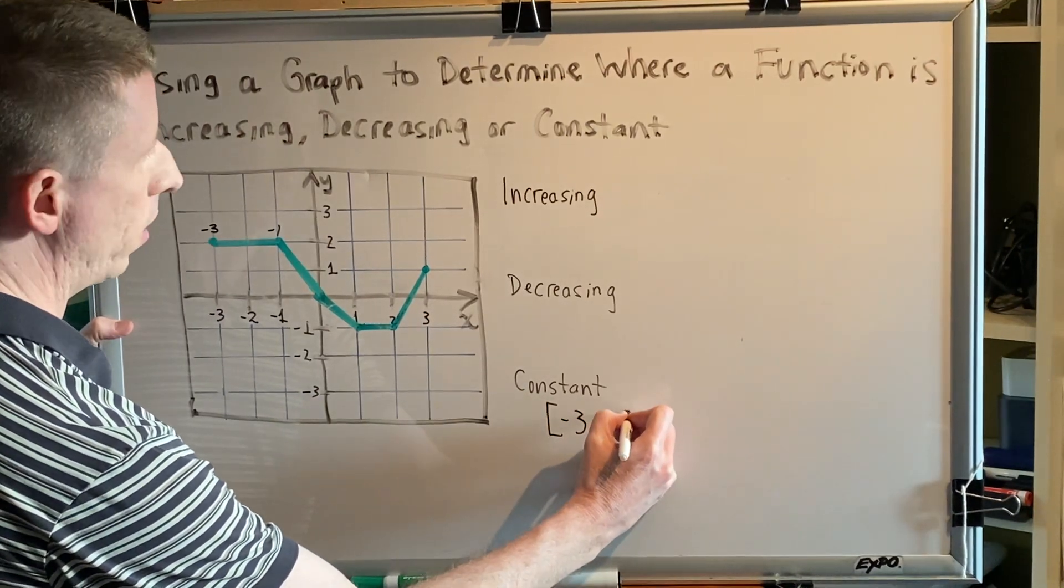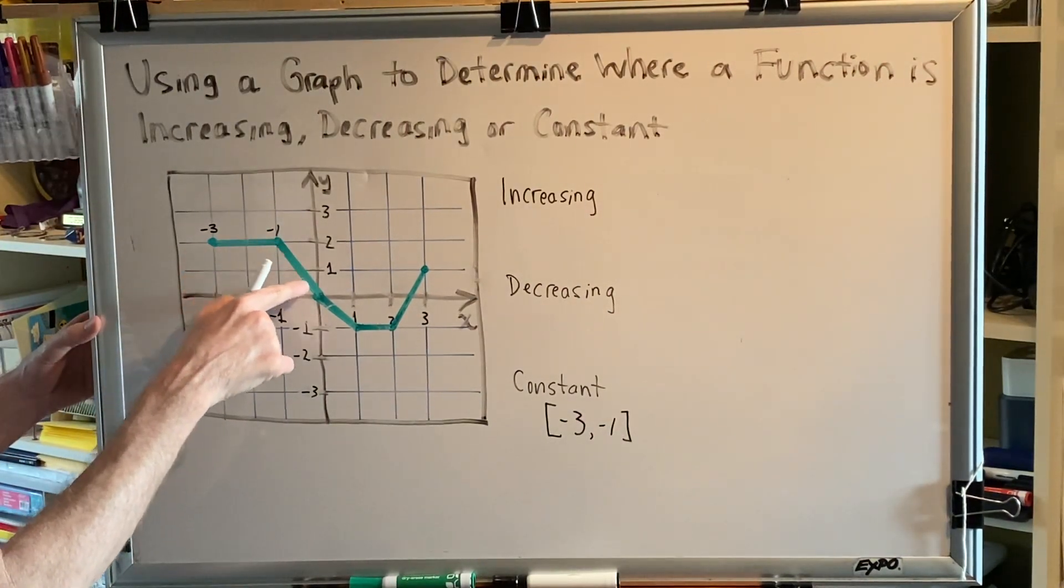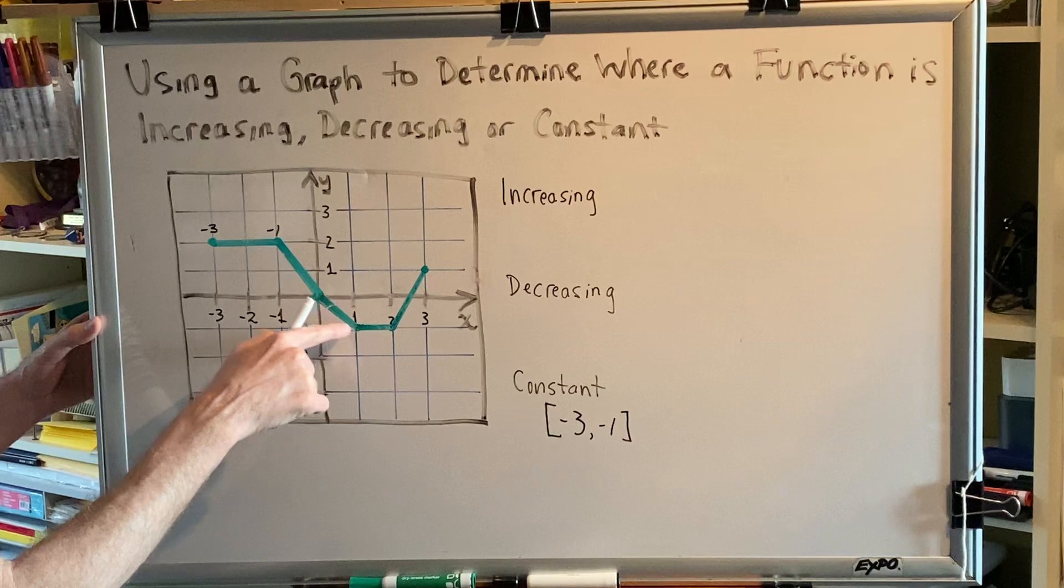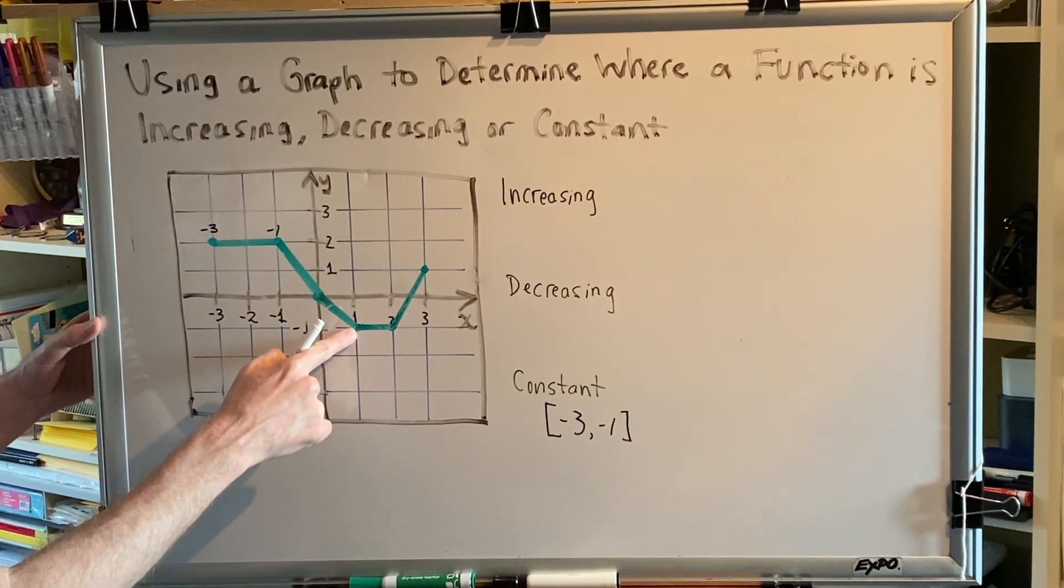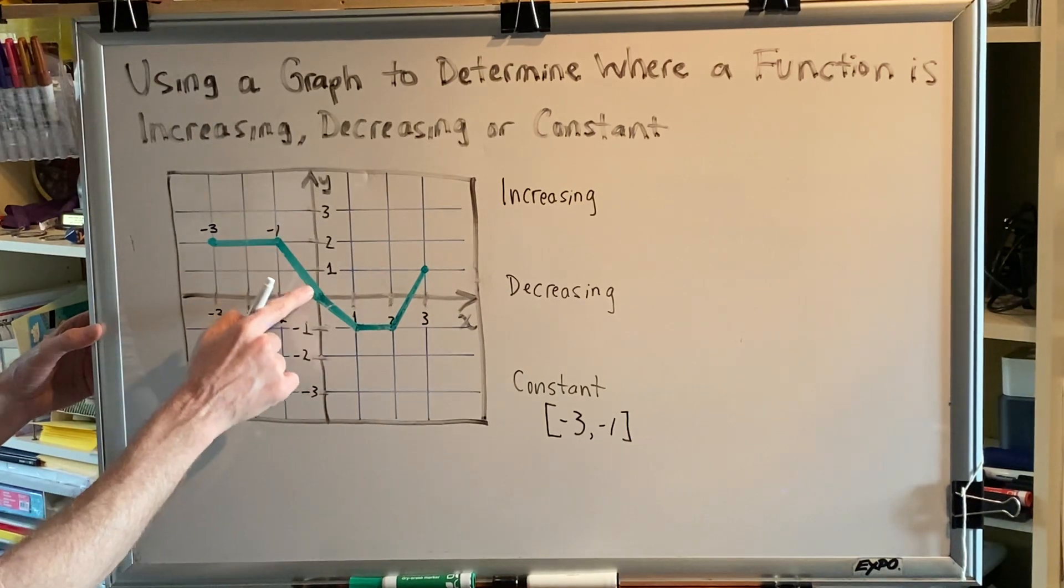As we now leave this point we begin decreasing as we travel all the way down to the point with an x-coordinate of one. It is true that as we travel through the origin the slope of the line changes.